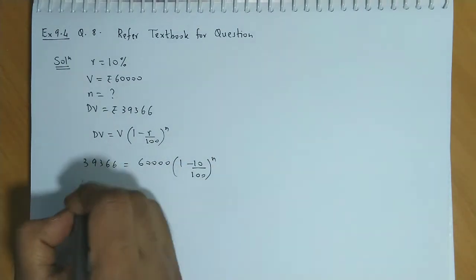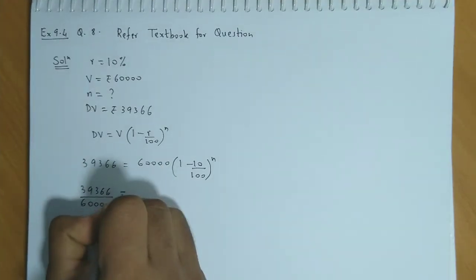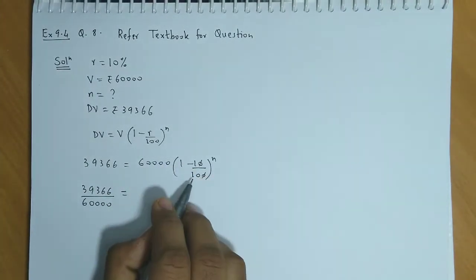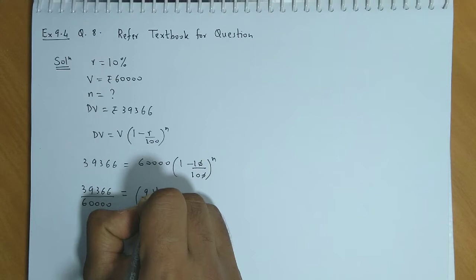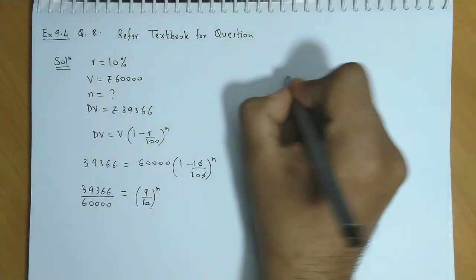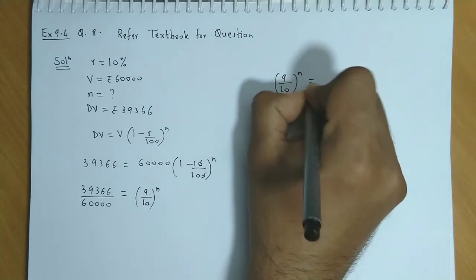So we have 39,366 divided by 60,000. If we cut this, 10 minus 1 is 9. Then, this will be 9 upon 10 raised to N. So basically, we have 9 by 10 raised to N.